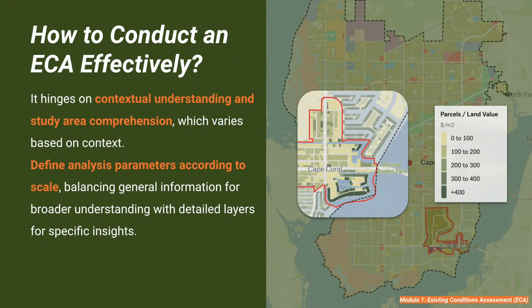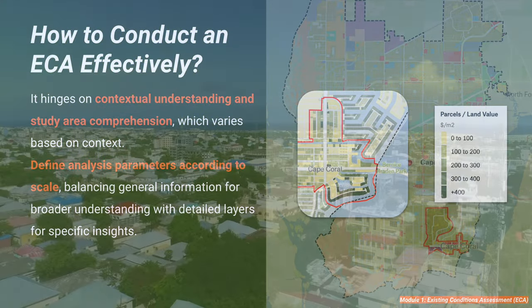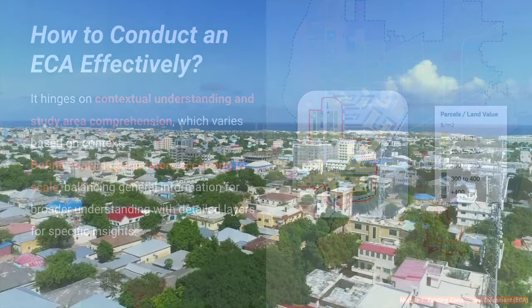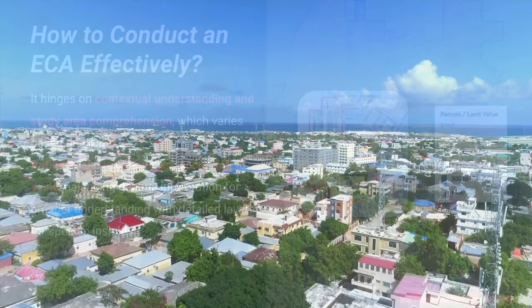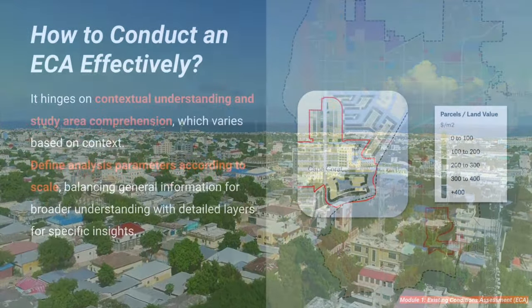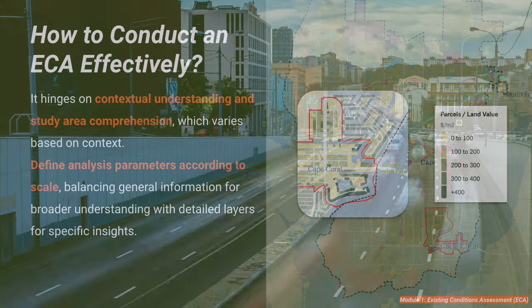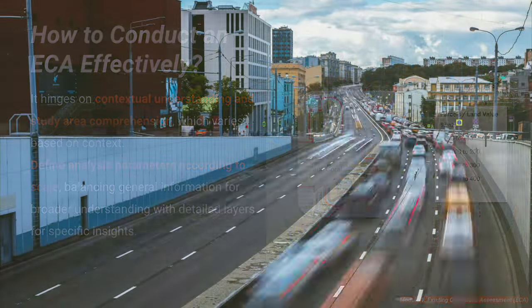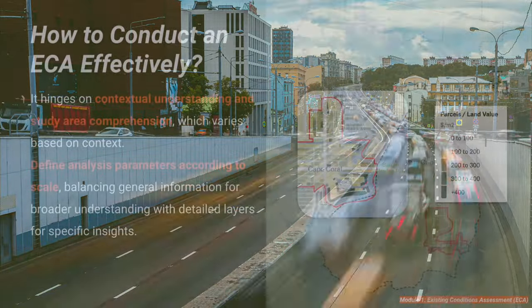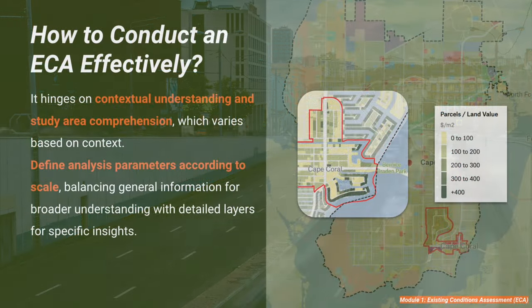For broader scales, aim for more general information that paints a comprehensive picture — understand the character of the area, zoning regulations, and overarching trends. Zooming into the study area takes layers of information to delve into more detail. This may include specific zoning, land values, proximity to major roads or transportation corridors, among other factors.